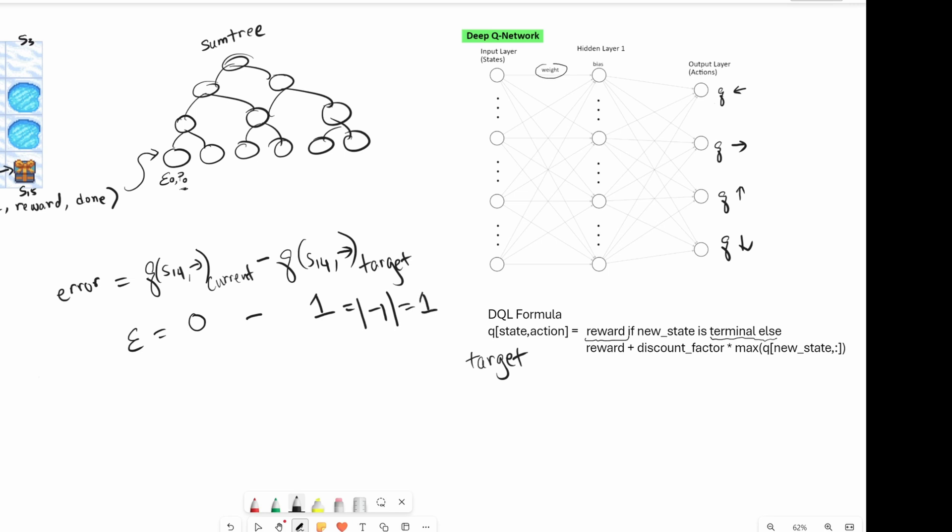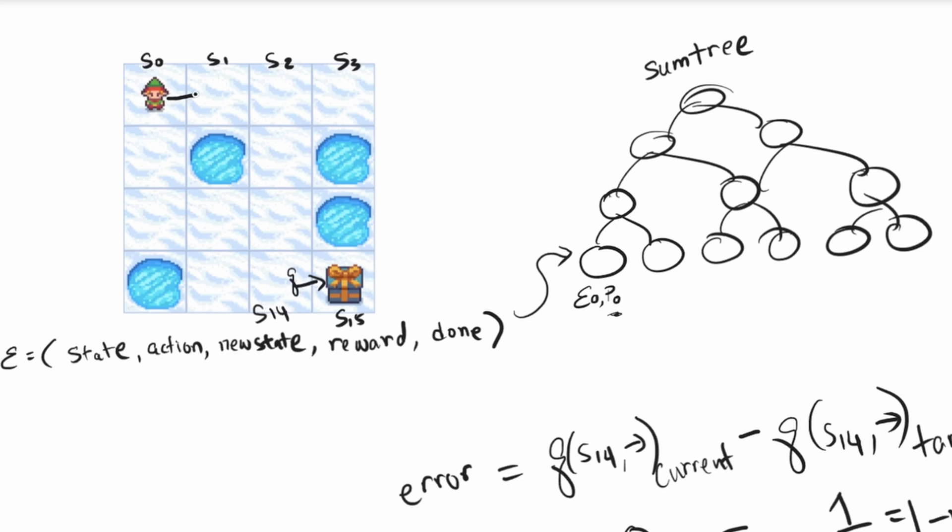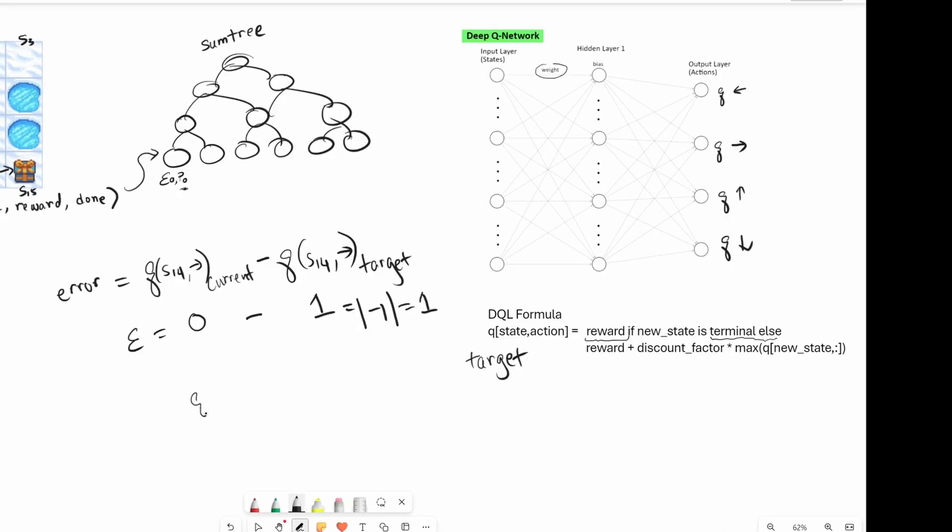Let me do one more example, and we'll see why this is a good indicator of priority. So let's say we're at state S0, and we're going into state S1. The Q of state S0, going to the right, is going to be zero or near zero. So we'll just use zero. And the target Q value, it's going to use the bottom formula here. The reward is zero.